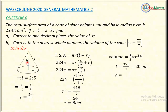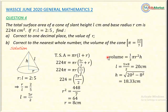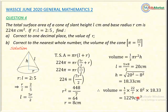Using Pythagoras to find H: H = √(L² − R²) = √(20² − 8²) = √(400 − 64) = √336 ≈ 18.33 centimeters. Substituting into the volume formula: Volume = (1/3) × (22/7) × 8² × 18.33, which gives approximately 1,229 centimeters cubed.